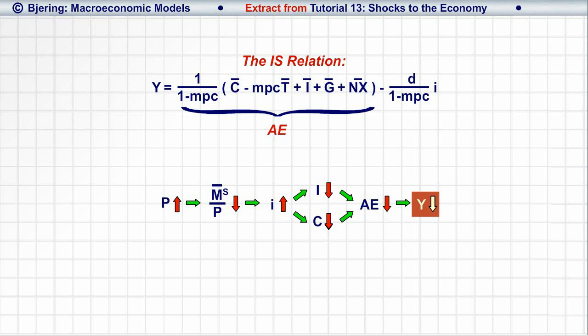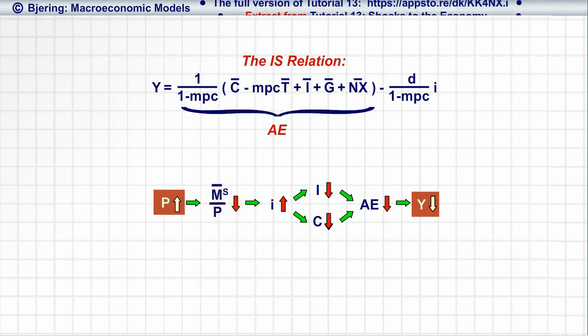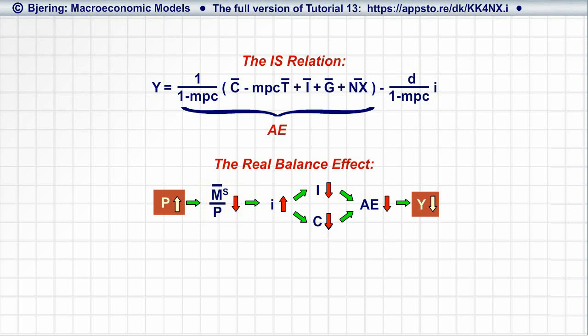Since the decrease in Y is generated by a decrease in the supply of real money balances, we call the negative relationship between the price level, P, and Y, the real balance effect.